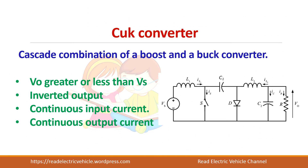There are various topologies of the buck-boost converter. One of them is the Cuk converter. It is basically a cascade combination of a boost and a buck converter. It gives a voltage greater or less than the input voltage, and it produces an inverted output like the buck-boost converter. The advantage of this converter is that it has both continuous input current and continuous output current.